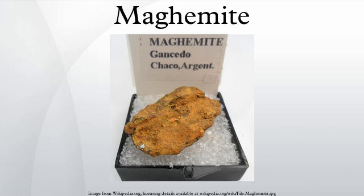Maghemite is a member of the family of iron oxides. It has the same spinel ferrite structure as magnetite and is also ferromagnetic. Maghemite can be considered as an Fe-deficient magnetite, with a formula where the vacancy symbol represents a vacancy, and the subscripts indicate tetrahedral and B-octahedral positioning.